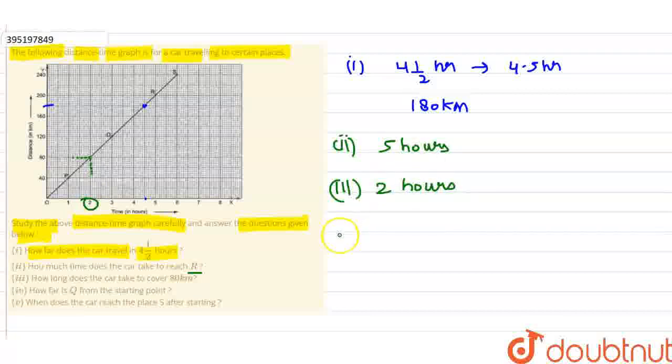Fourth part: How far is Q from the starting point? Q is 120 kilometers from the starting point.